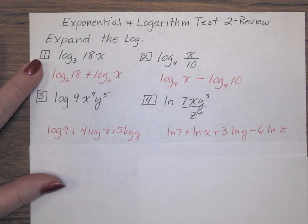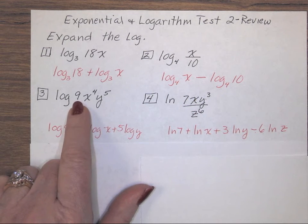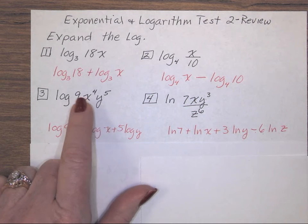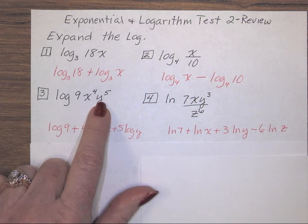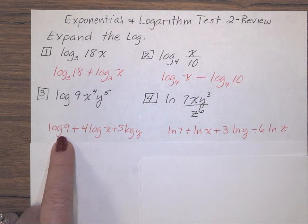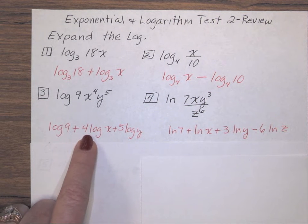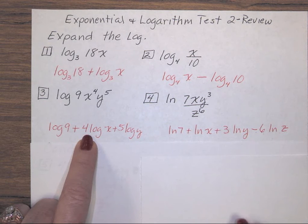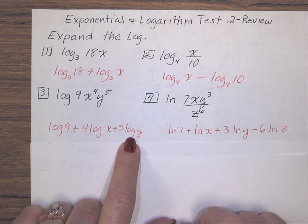For number 3, you have a 9, an x, and a y. So you're writing log 3 times. So you have log base 10 of 9, plus 4 times log base 10 of x, plus 5 times log base 10 of y.